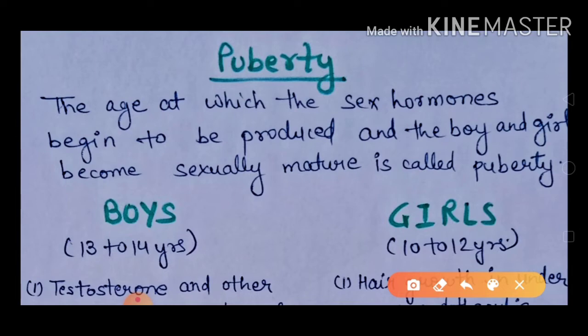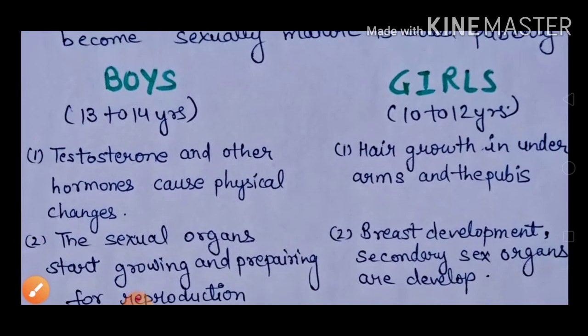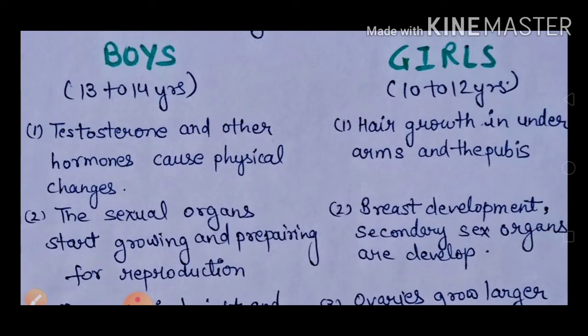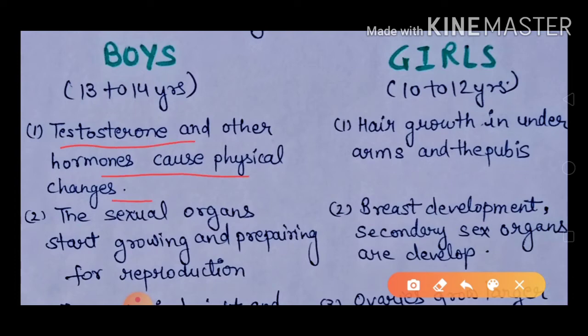Now, what are the changes in boys and girls during puberty? In boys, puberty time is 13 to 14 years, and in girls, it is 10 to 12 years. In this age they become mature for sexual characters. In boys, testosterone and other hormones cause physical changes.